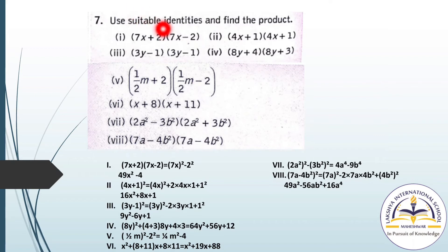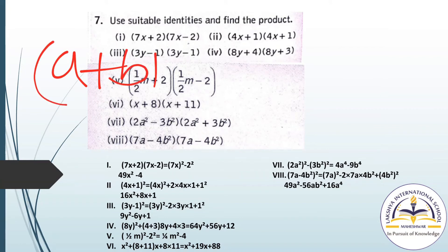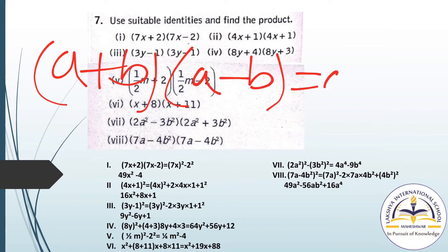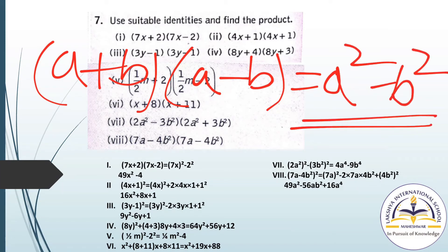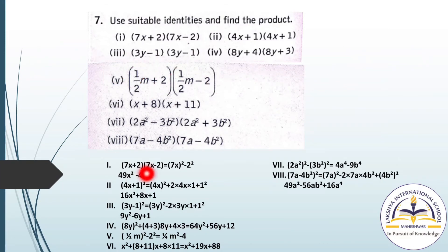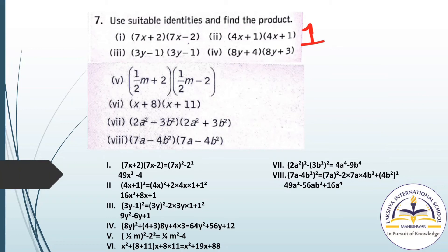Question number 7: use suitable identities and find the products. For (7x + 2) and (7x - 2), we apply Identity 3: A² - B². So (7x)² minus 2 square gives 49x square minus 4. For question number 2, Identity 1 will apply: (A + B) whole square equals A square plus 2AB plus B square.